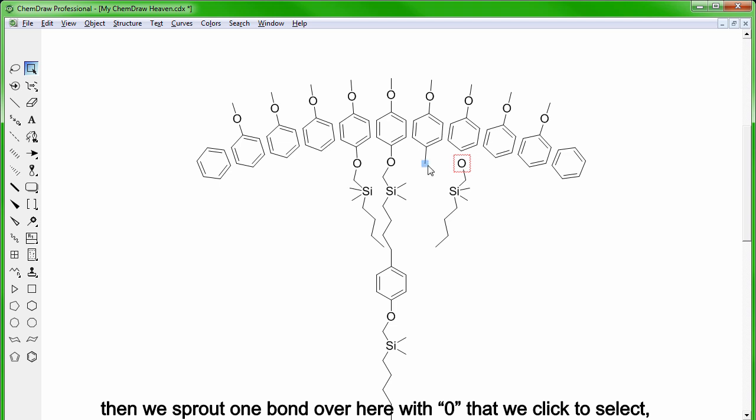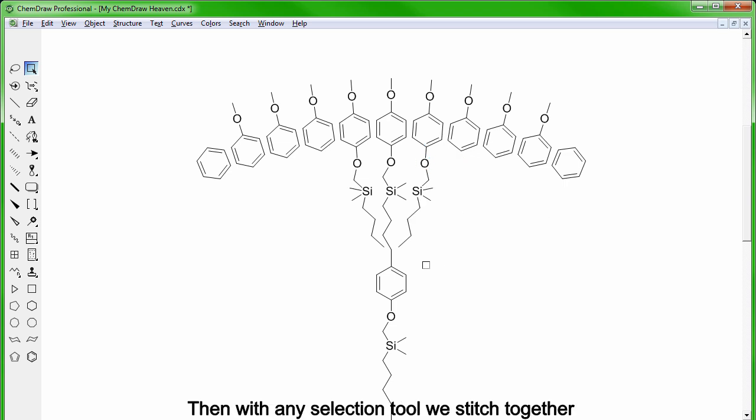Then we sprout one bond over here with 0 that we click to select, hold SHIFT, select the oxygen atom and hit CTRL-J again. Then with any selection tool we stitch together the different carbons to the benzylic carbon.